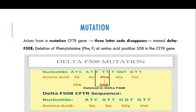What happens in cystic fibrosis is that there is a mutation in the CFTR gene. Many mutations have been reported, but in this video I am focusing on the most important mutation, which is reported in more than 70% of cystic fibrosis cases. In this mutation, there is a deletion at position number 508. What this means is that a three-letter codon — CTT — is deleted. This codon codes for the amino acid phenylalanine, so phenylalanine at position number 508 is no longer present.